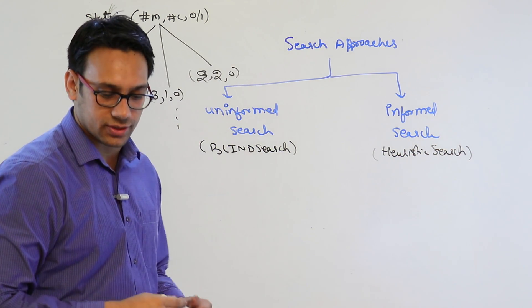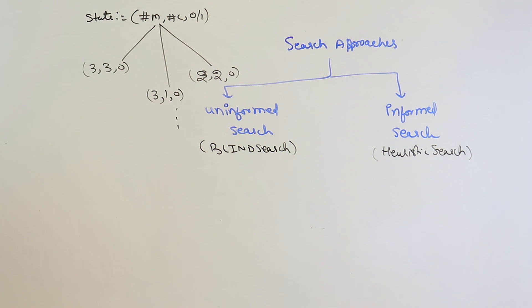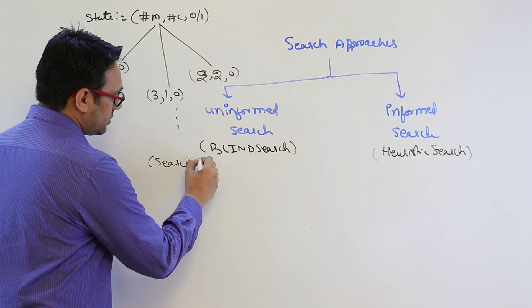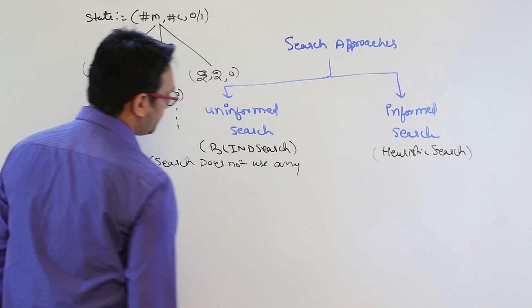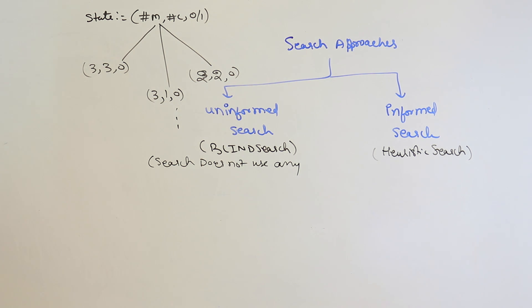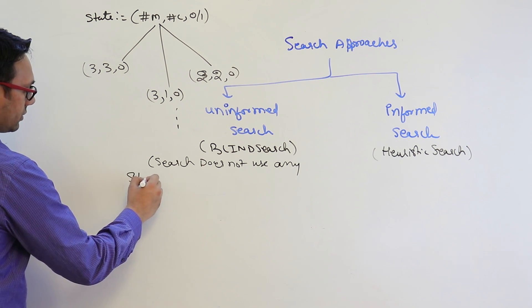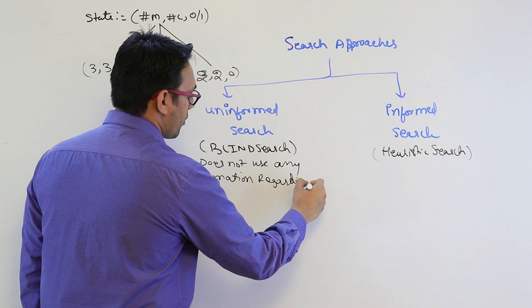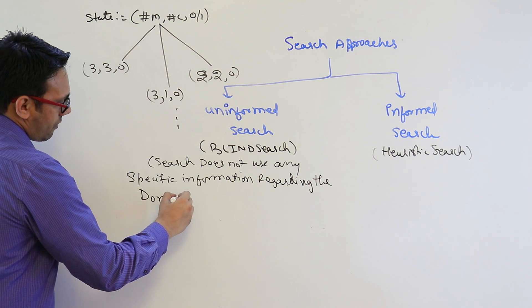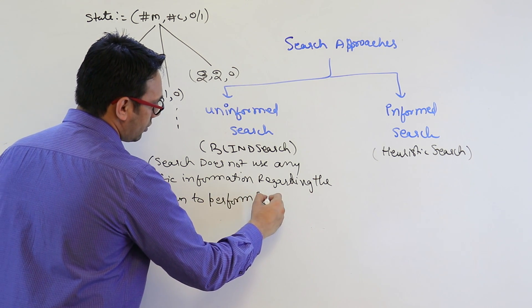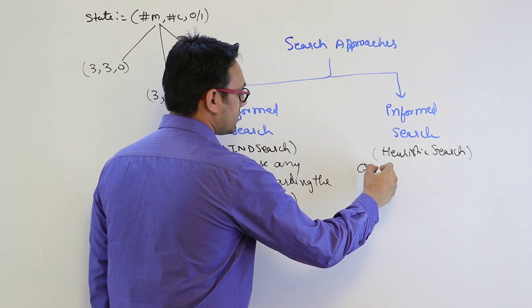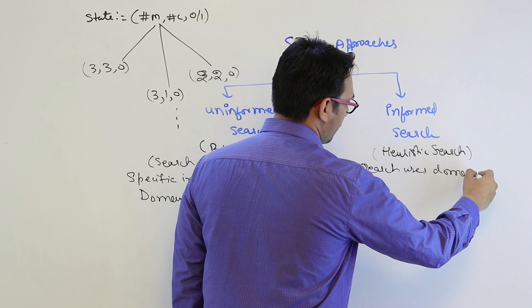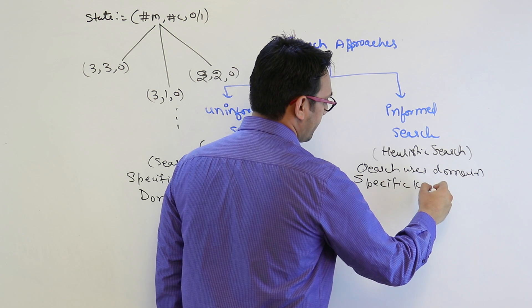In blind search, the search does not use any specific information regarding the problem domain to perform the search. But in the case of heuristic search, the search uses domain-specific knowledge to perform the search.